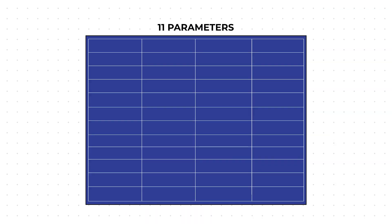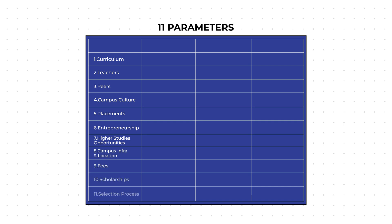So let's get into it. The parameters start with curriculum, then teachers, peers — the kind of students you study with — campus culture, placements, entrepreneurship opportunities, higher studies opportunities, campus infrastructure and location, fees, scholarships, and the selection process. For each of these parameters, you need to give a college a score between 1 to 5, and at the end you total all the scores to make an informed decision.